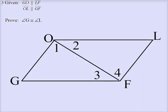Alright, next example. We're given that GO and LF are parallel, and OL and GF are parallel. And our job is to prove that angle G and angle L are congruent angles.